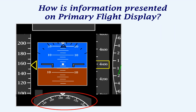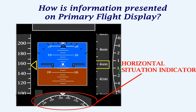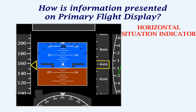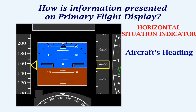At the bottom of the PFD we have the horizontal situation indicator, which gives us the heading of the aircraft. This arrow represents the current heading. As the aircraft turns, its heading will be shown here. This basically acts like a digital compass on the aircraft.